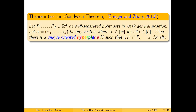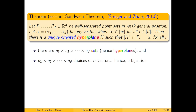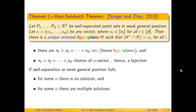With these two conditions we can formally state the alpha version of the ham sandwich theorem. Given d colors in d-dimensional space and the appropriate alpha vector, there is always a unique oriented hyperplane such that the positive half space contains exactly alpha_i points of color p_i for all i. The number of colorful sets is simply the product of the cardinalities of the colors; each determines a unique colorful hyperplane, which equals the number of choices of alpha vector. So there is a bijection between colorful hyperplanes and alpha vectors. However, if either well separation or weak general position fails, then for some alphas there might be no solutions and for some alphas there might be multiple solutions.